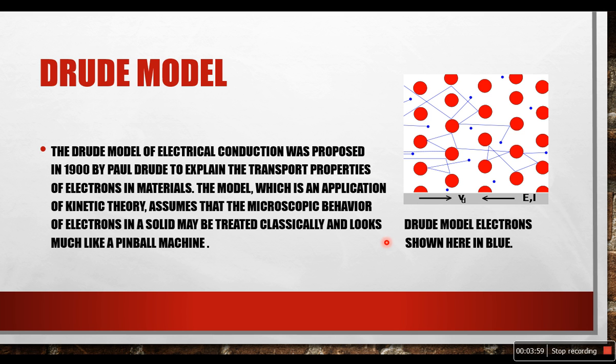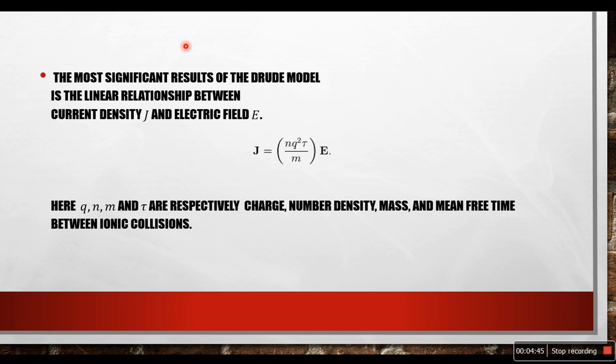In order to derive the equation of Ohm's law in terms of conductivity we need to know a little bit about Drude model. The Drude model of electrical conduction was proposed in 1900 by Paul Drude to explain the transport properties of electrons in materials. The model, which is an application of kinetic theory, assumes that the microscopic behavior of electrons in a solid may be treated classically and looks much like a pinball machine. Here Drude model in electrons is shown in blue.